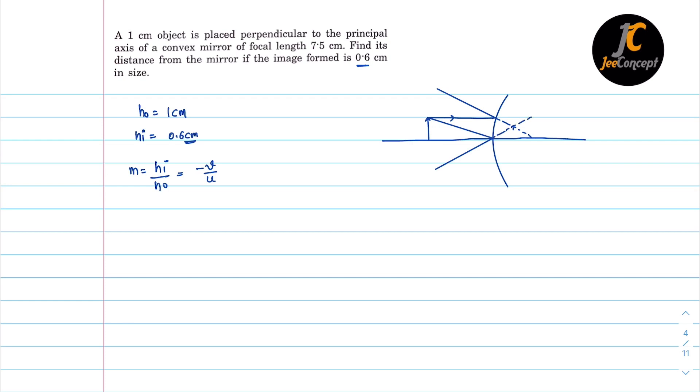Clearly the image is erect. That means the hᵢ sign and the h₀ sign will also be positive. Now that means hᵢ is equal to 1 by u is equal to 0.6 by 1.